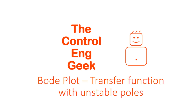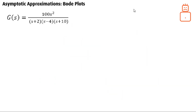Hi friends and welcome back to the control engineering tutorial. Today we are going to learn how to draw a Bode plot for transfer functions that have unstable poles. We have a transfer function here, as you can see, it has an unstable pole at plus 4.